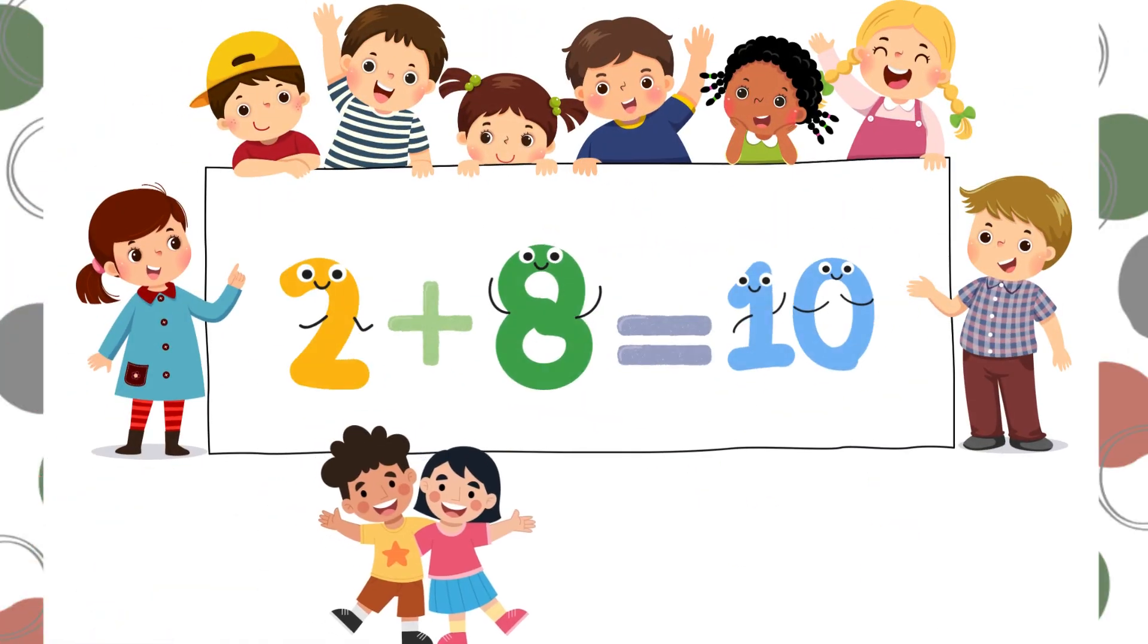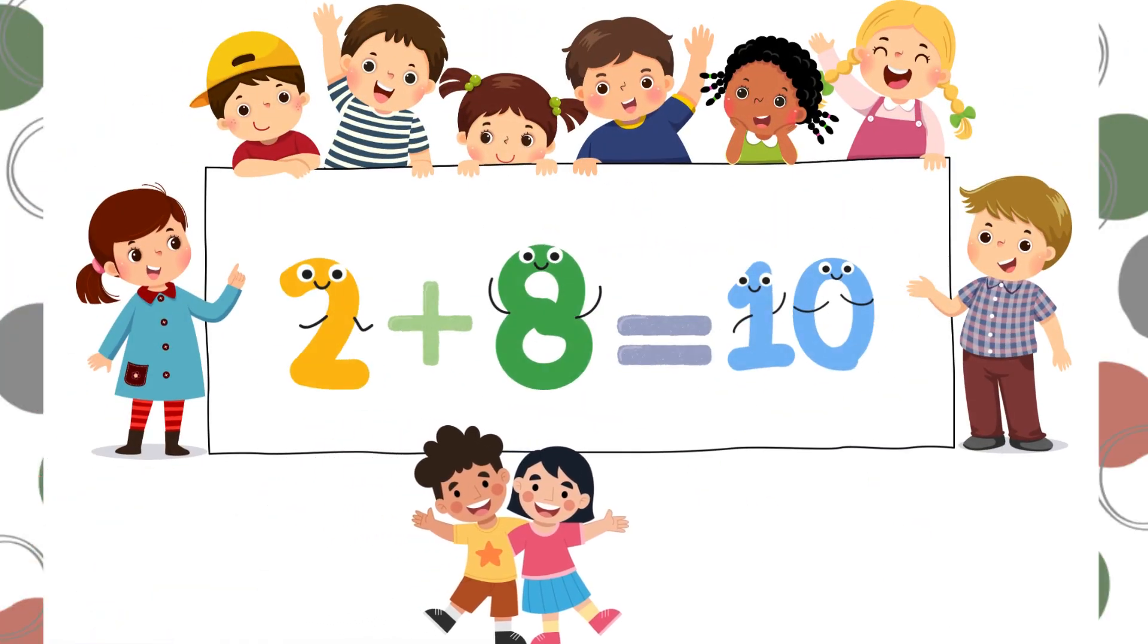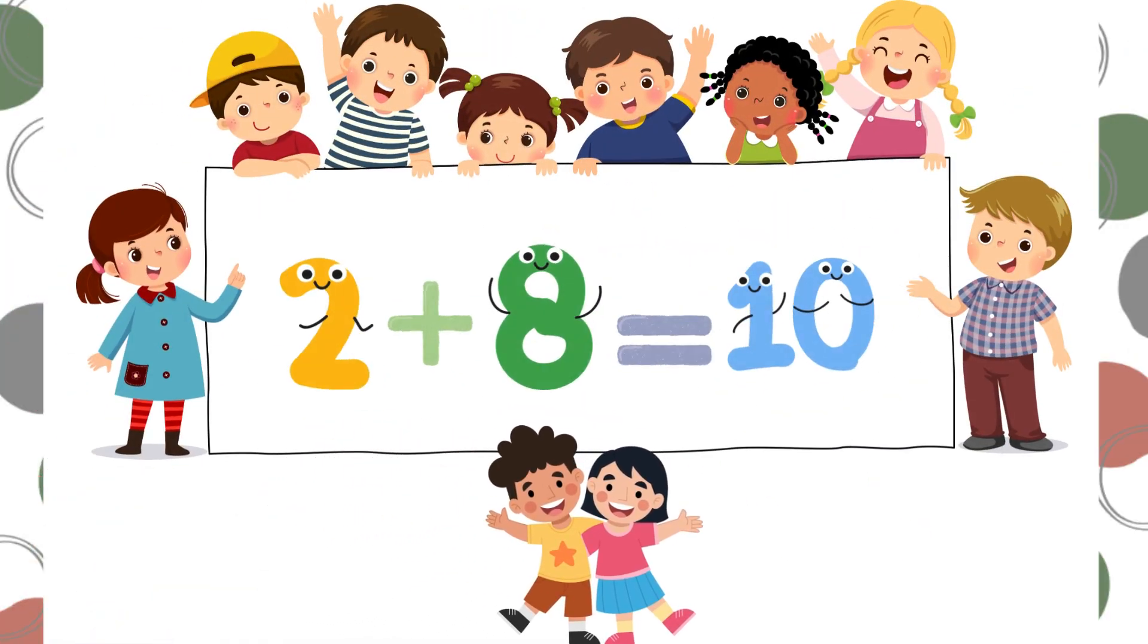2 and 8 are also friends of 10. 2 children plus 8 children equals 10 children. Touch the 2 children that are hugging.